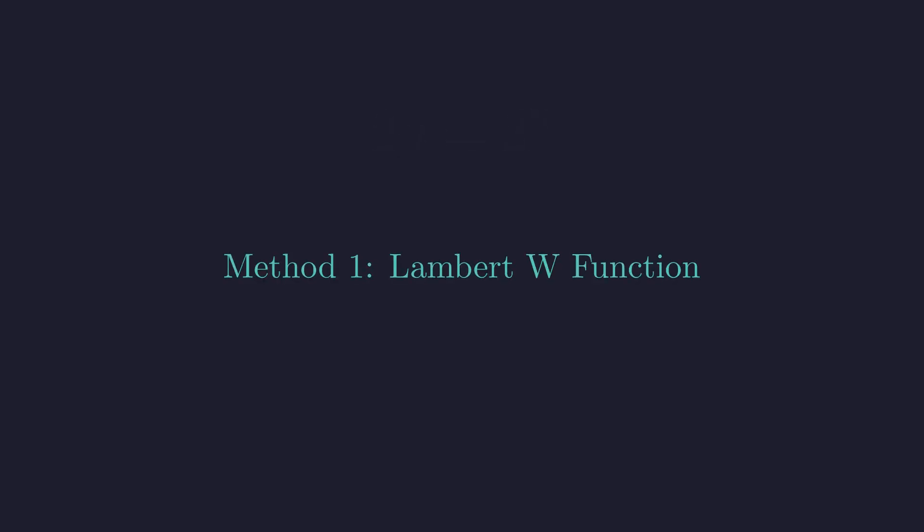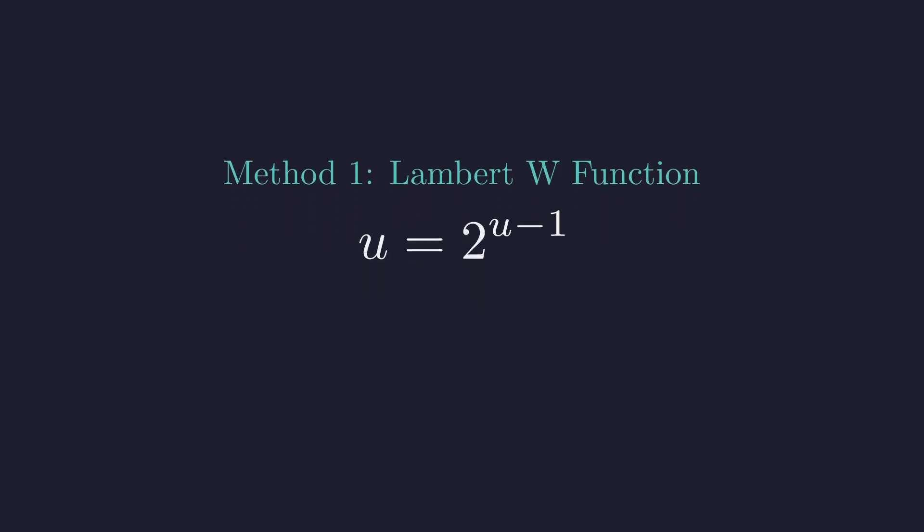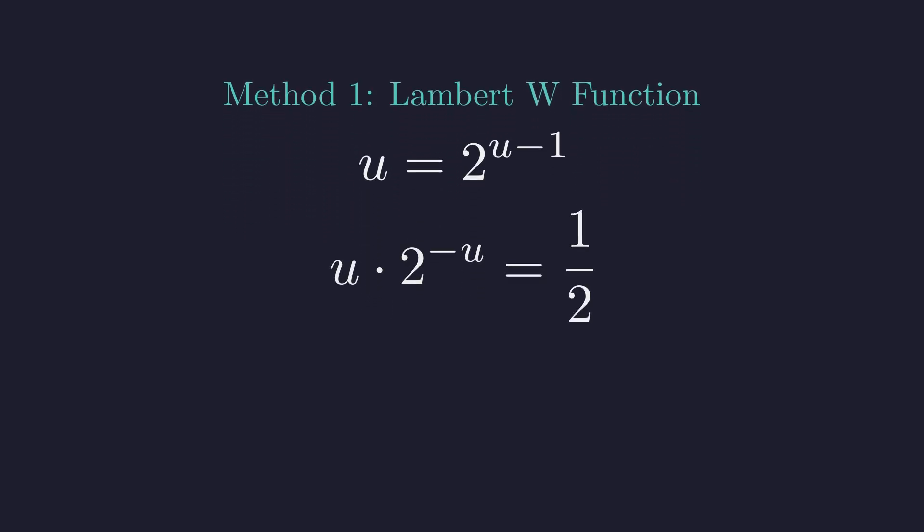We can solve this analytically using the Lambert W function, which is designed for equations involving exponential and linear terms. Starting from 2u equals 2 to the power of u, dividing by 2 gives u equals 2 to the power of u minus 1. Multiplying both sides by 2 to the negative u isolates the exponential term. Converting to base e, 2 to the negative u becomes e to the negative u natural log of 2.